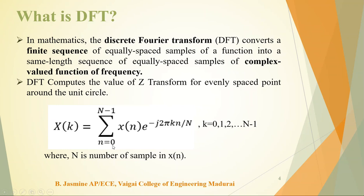The DFT formula is: X(k) = summation from n=0 to N-1 of x(n) · e^(−j2πkn/N). Here x(n) is the discrete signal before applying DFT — the given input samples. The term e^(−j2πkn/N) is known as the twiddle factor or phase factor, which is the frequency component revealed by the Fourier Transform. Capital N is the number of samples in x(n).